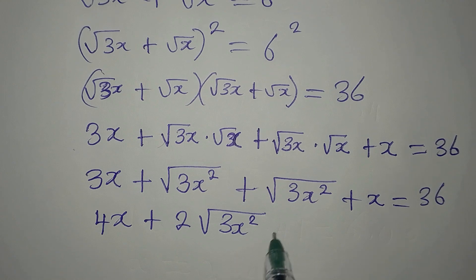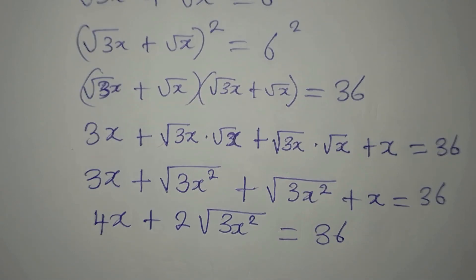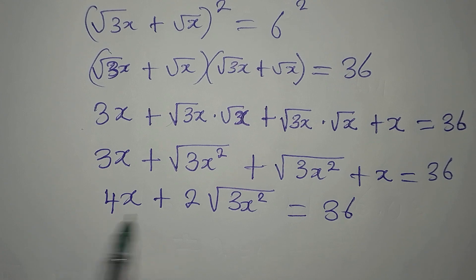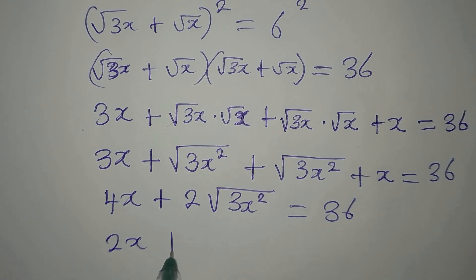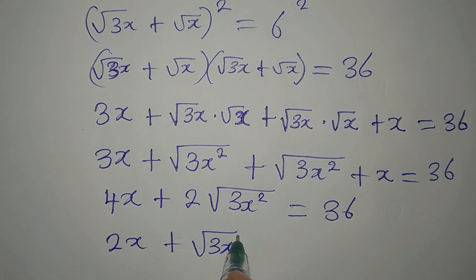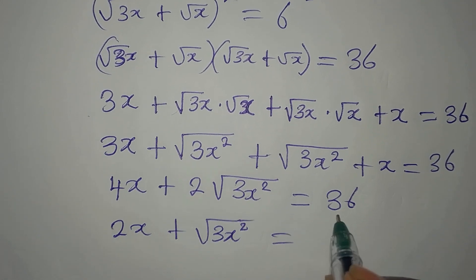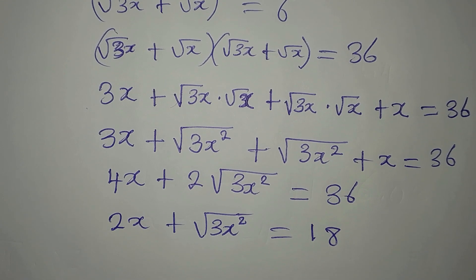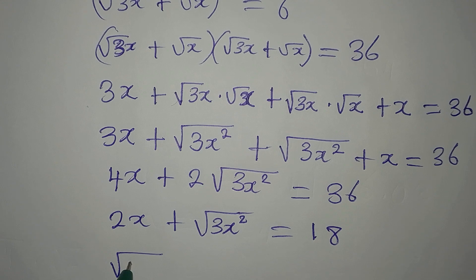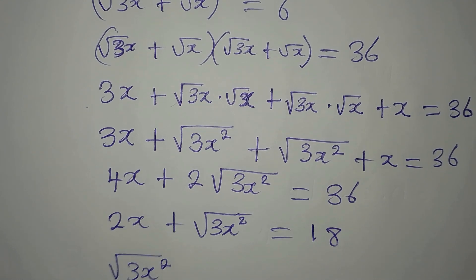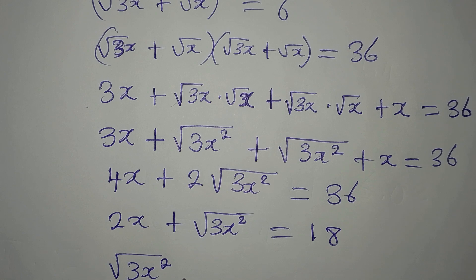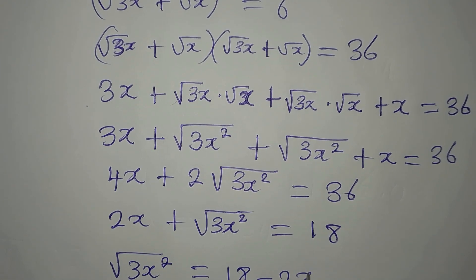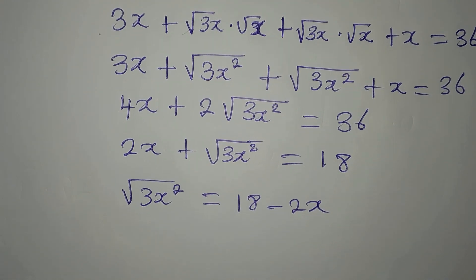Now I can simplify by dividing everything by 2, giving 2x plus square root of 3x squared equals 18. Now let us make the square root term the subject: square root of 3x squared equals 18 minus 2x.